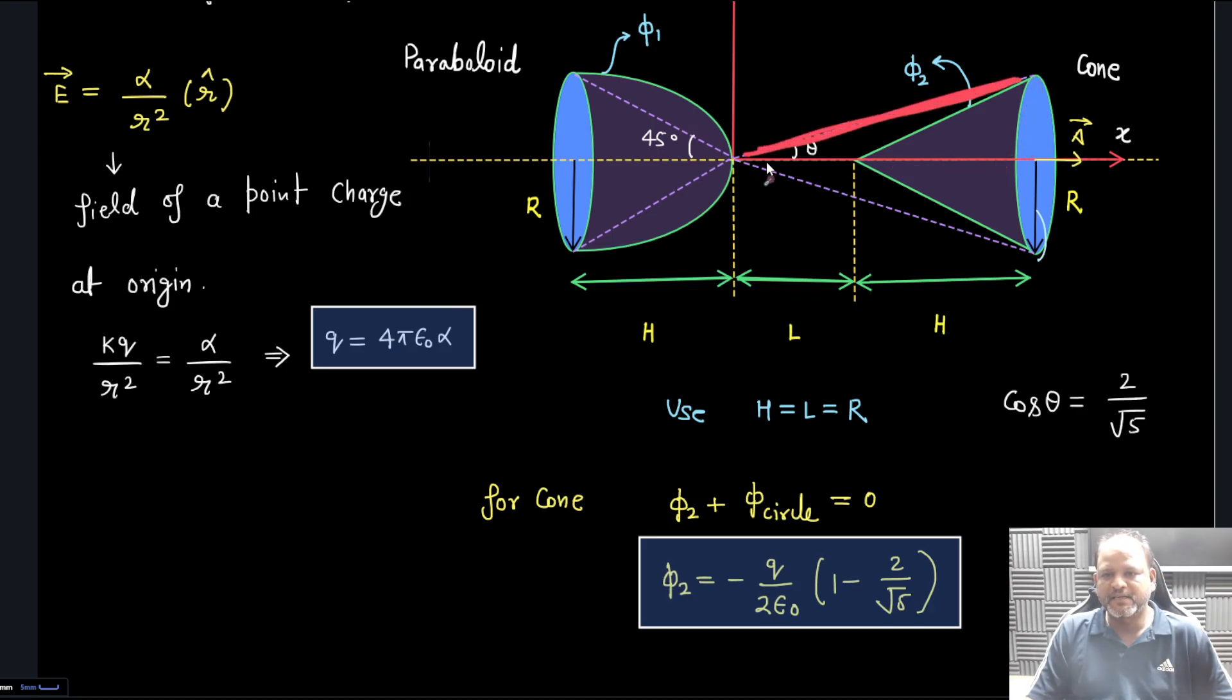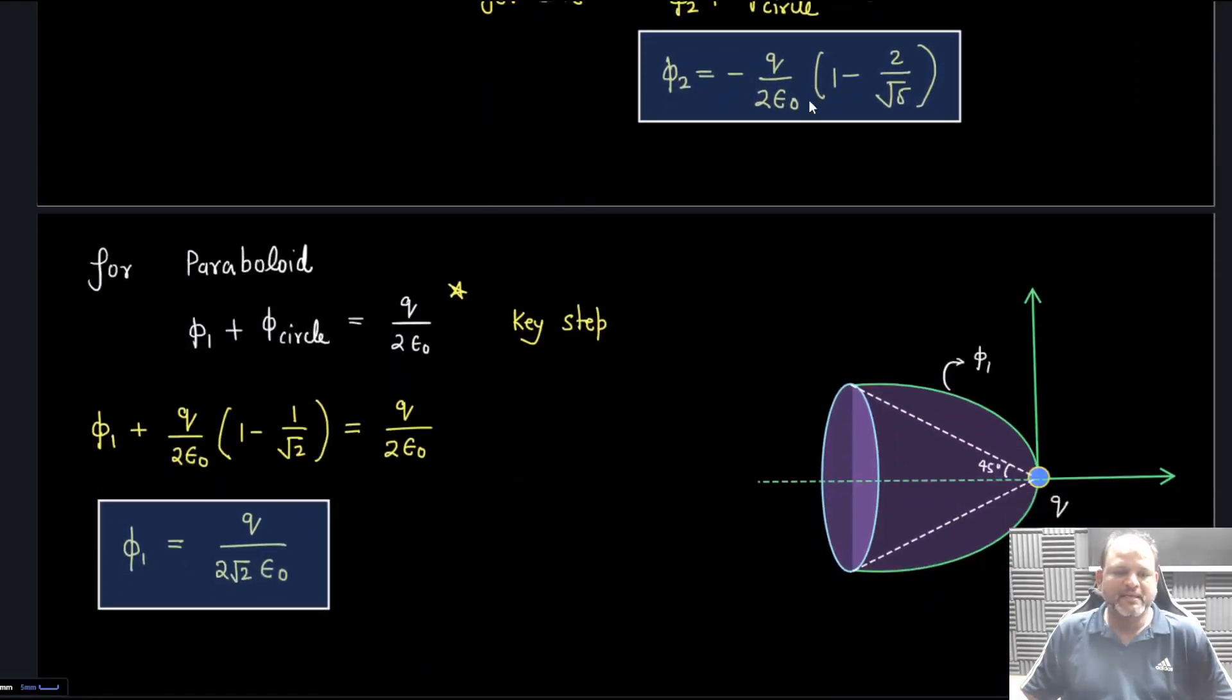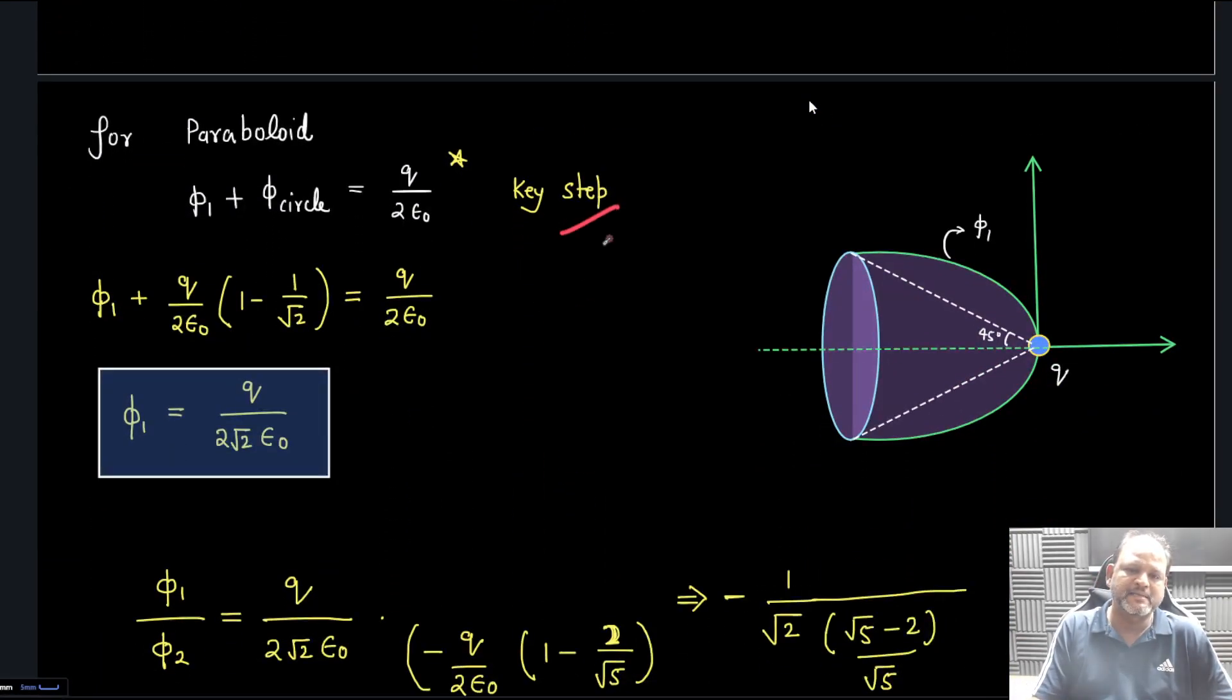Cos θ is 2/√5, so we are substituting it here. We know the value of Φ₂ now. Main part is in the paraboloid - this is the key step as I said.